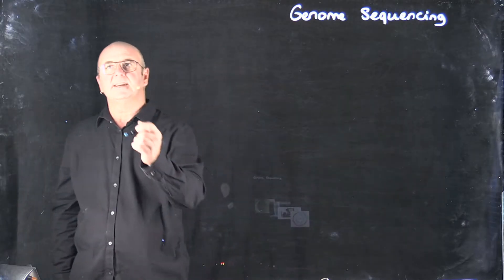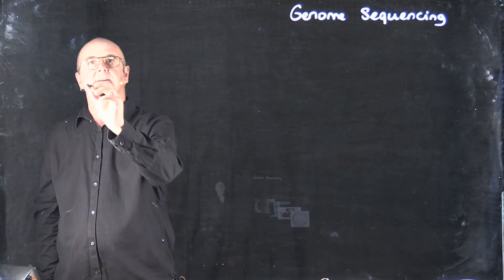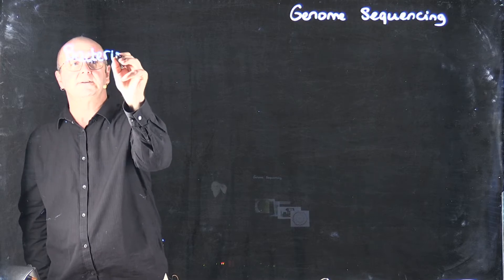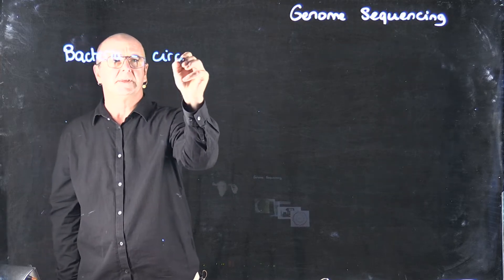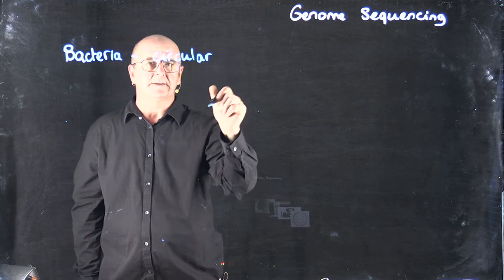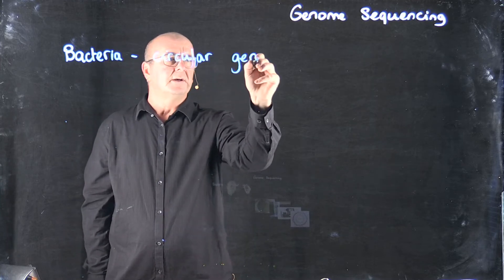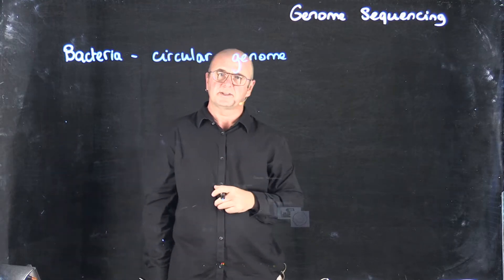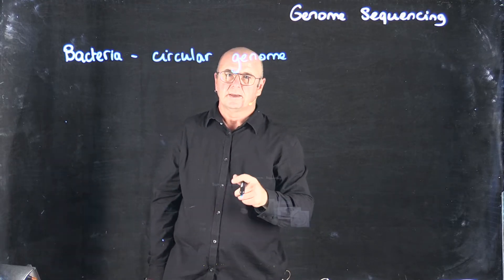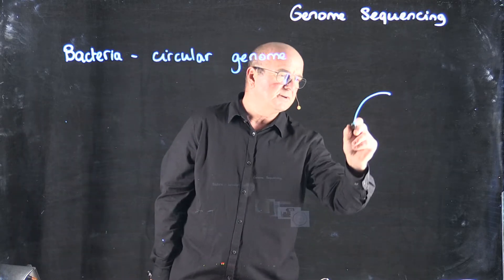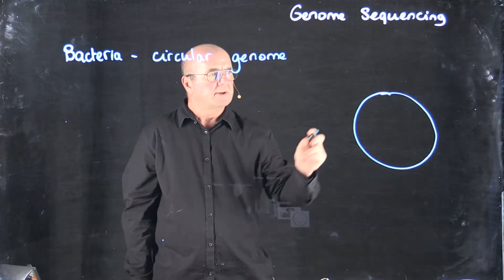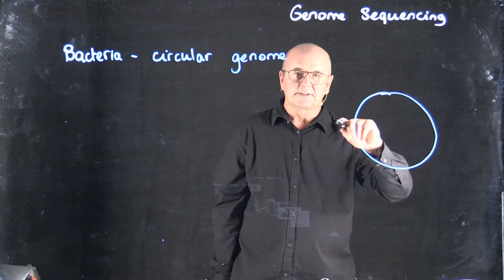In most cases, but not all cases, bacteria have a circular genome. There are certainly exceptions to this rule, but for the purposes of the class, we're going to work with circular genomes. You can think about the bacterial genome as being a complete circle that doesn't have a start or a stop - it's joined up.